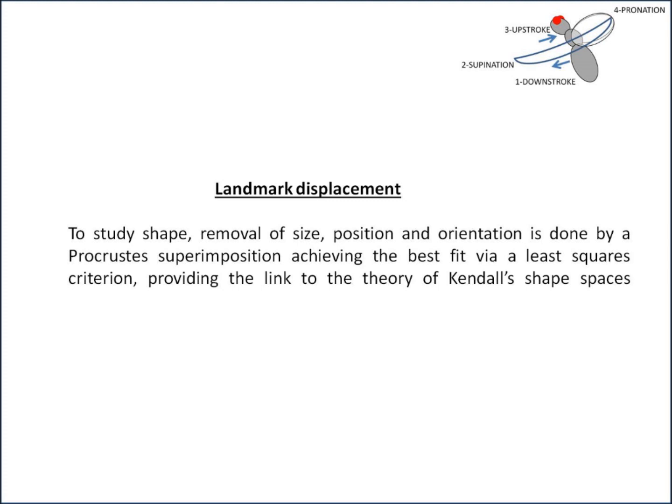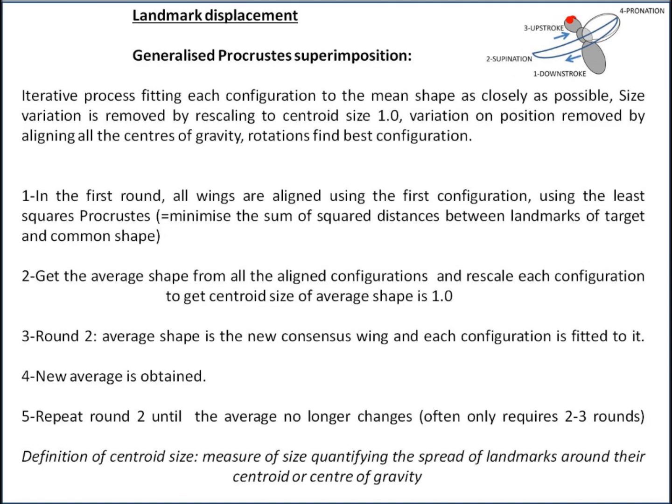This provides the link to the theory of Kendall's shape space. The generalized Procrustes superimposition algorithm is an iterative process which fits each configuration to the mean shape as closely as possible. Size variation is removed by rescaling to a centroid size of one, and variation of position is removed by aligning all the centers of gravity. Then rotations are applied to find the best orientation.